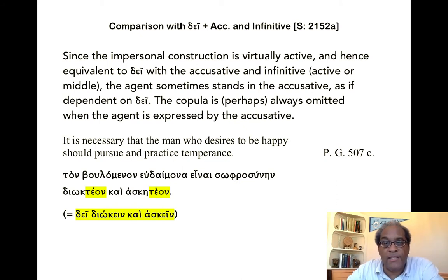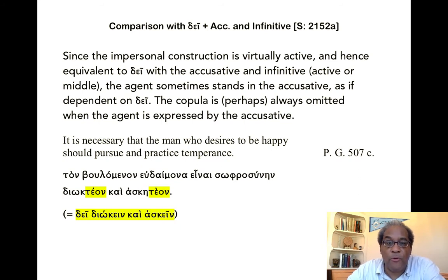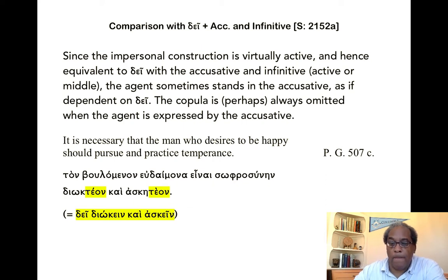A wonderful example from Plato's Gorgias: 'It is necessary that the man who desires to be happy should pursue and practice temperance.' Ton boulomenon eudaimona einai sōphrosynēn diōkteon kai asketeon — equivalent to dein diōkein kai askein sōphrosynēn.